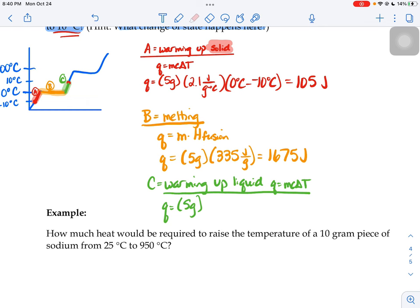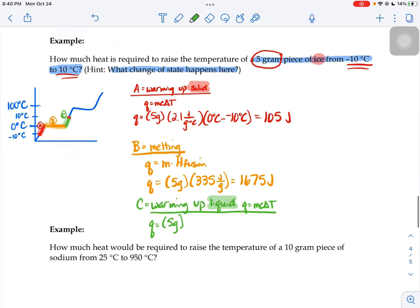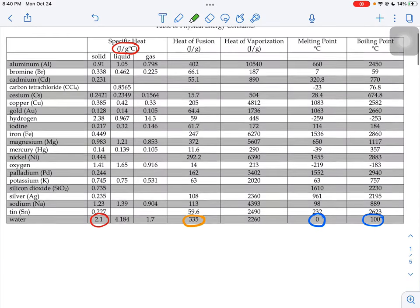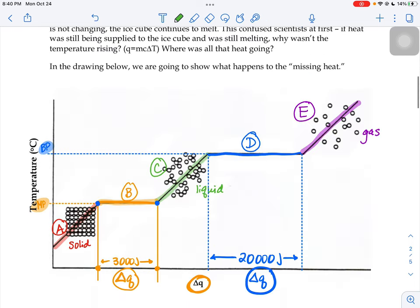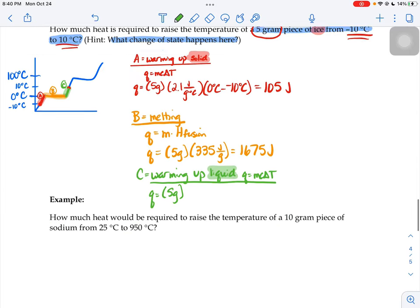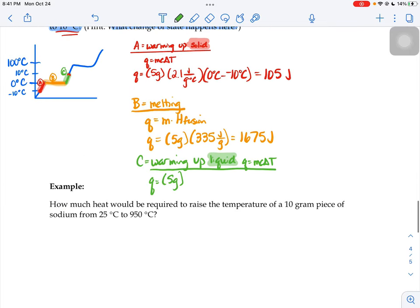Our mass is still going to be five grams. Now, because I just melted it in the previous step, I need the liquid C value. So I need water's liquid C value. Here it is, 4.184. I'm going to use that in my equation.